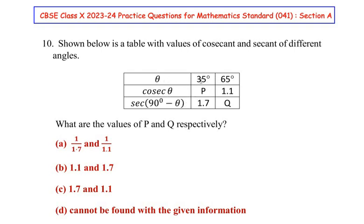Theta represents the angles 35 and 65 degrees respectively. If we take cosec of 35 degrees then we get P, cosec of 65 degrees is 1.1, sec of 90 degrees minus theta as 35 we get the value as 1.7, and sec of 90 degrees minus theta as 65 we get the value as Q.